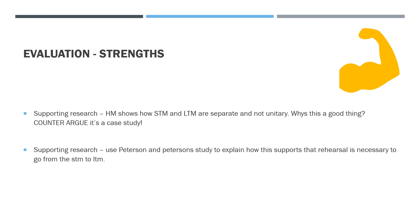Now we are on to evaluation — PECs, I know that's your favourite thing. Two supporting research points for your strengths. First one: supporting research through HM. In your E, show or say how HM demonstrates that STM and LTM are separate and not unitary — why is that a good thing? It provides support for the model. Counter-argue by noting it's a case study and why that's a bit of a negative. Don't go into too much detail, just a sentence or two. Then another piece of supporting research — Peterson and Peterson's study to explain how it supports rehearsal as necessary. It also shows that the arrows are important on the diagram, not just the stores.